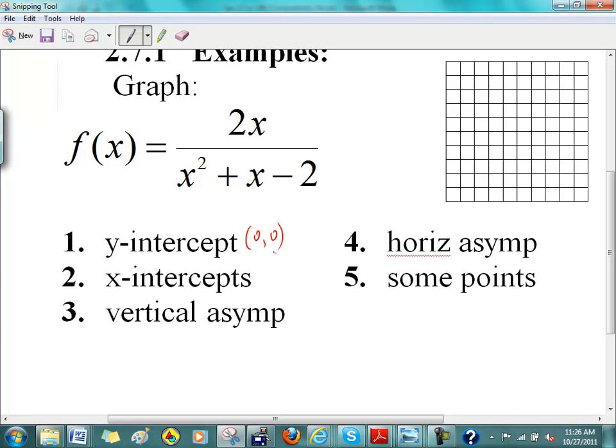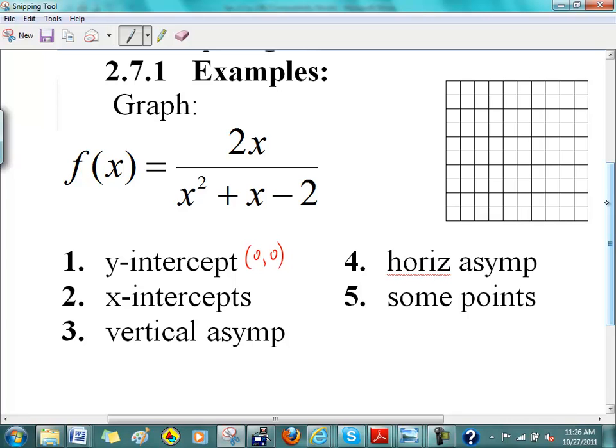How do you find the x-intercept? What do you get if you put y equals zero? So the x and the y-intercepts are the same point, it's the origin. How about the VA? How do you find the vertical asymptotes? Yeah, Elizabeth. Okay, if you factor the denominator, in other words you set the denominator to zero, x plus two, x minus one. So your VA is x equals negative two, x equals one.